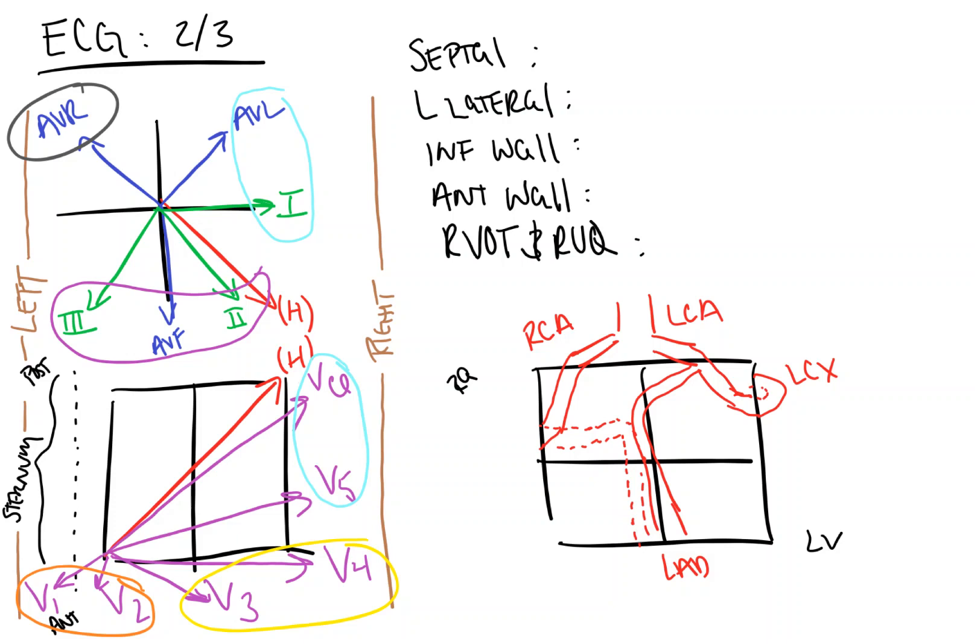So, now what of these corresponds to what? Well, I told you it would be just as easy. The left anterior descending, our LAD, runs right over the septum of the heart and therefore it supplies the septal wall. Left circumflex, you guessed it, goes around the left side. So it's going to supply our left lateral wall. Inferior wall, anterior wall, right ventricular outflow tract and right upper quadrant, guess what? All of these are the right coronary artery.